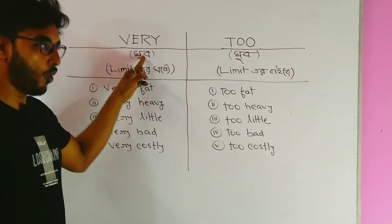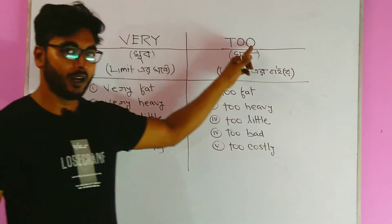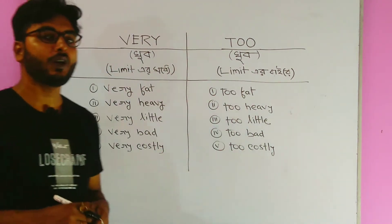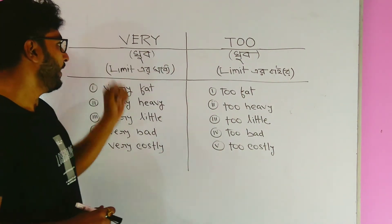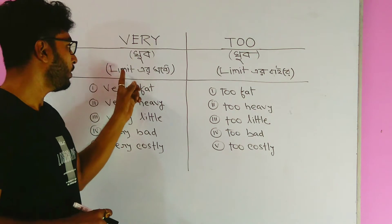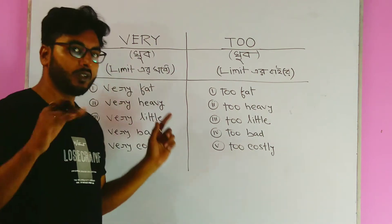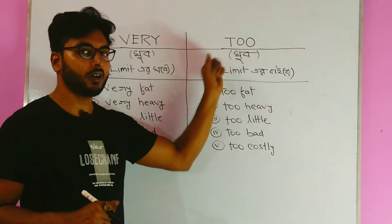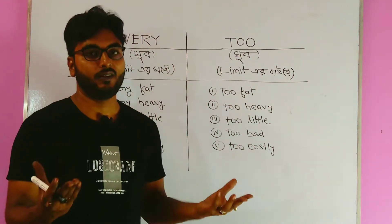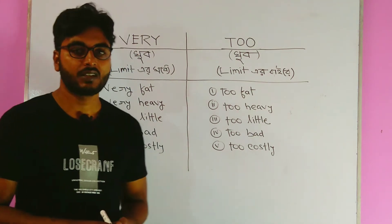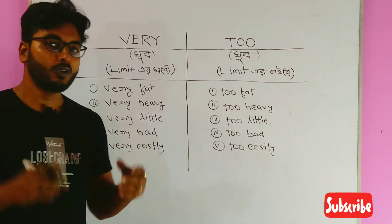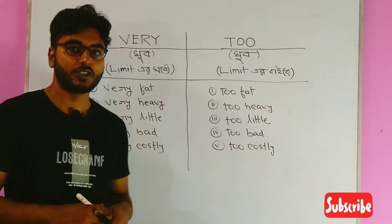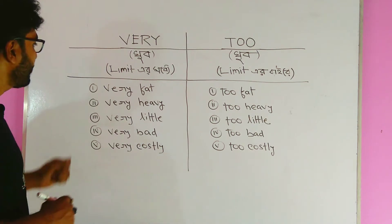Friends, 'very' means 'khub' (very/quite), and 'too' also means 'khub' (very/extremely). So where is the difference? When we say 'very', it is within the limit. And when we use the word 'too', it is beyond the limit — over the limit. Let us try to understand this through some examples to make the idea clear.